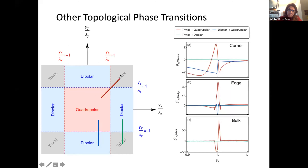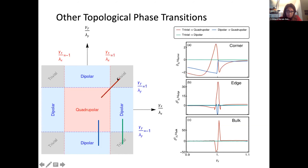In addition to the quadrupolar-to-trivial phase transition along the symmetry-preserving diagonal, there are other topological phase transitions: from dipolar to quadrupolar (blue line) and from trivial to dipolar (green line). The question is whether this thermodynamic description of topological phase transitions also holds for these other transitions. I will now repeat the same procedure: for the blue line, gamma_x = 0.5 varying gamma_y; for the green line, gamma_x = 1.5 varying gamma_y.